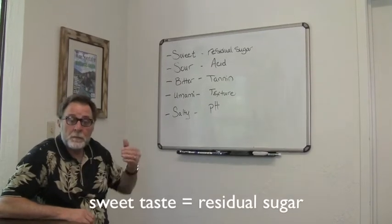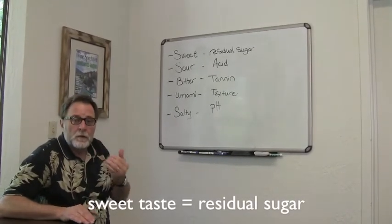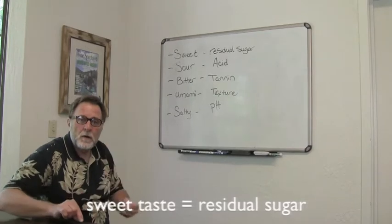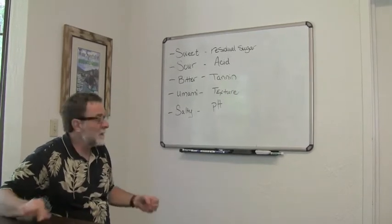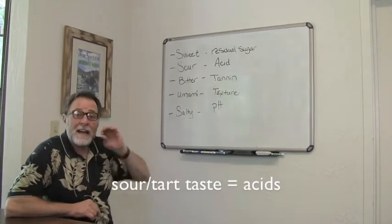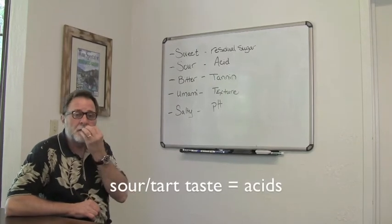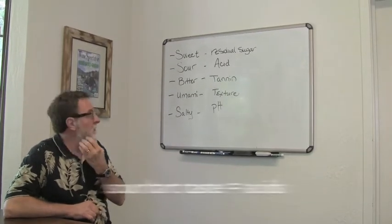Sweetness is any residual sugar that may be in the wine. The normal palate can't taste below 0.3 grams per milliliter. Sour is acid—it's the citric acid, it's the tartaric acids that you get in a wine.